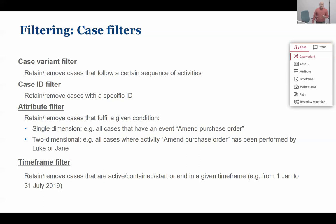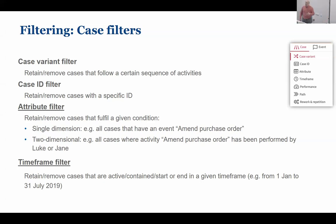Bear in mind that attribute filters do not only allow you to filter by cases that contain a given activity, but also cases where a given resource was involved, or cases that contain at least one event that had a certain value on one of its attributes — that's why it's called an attribute filter. Now I'm going to demonstrate concretely what I mean by filtering cases where there is at least one event whose attribute value is X.